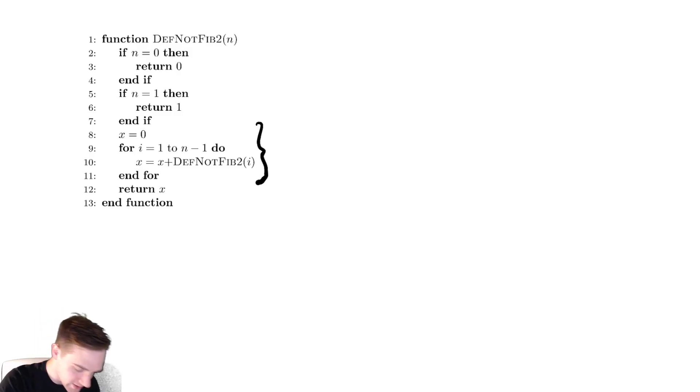We are looping and making recursive calls as we loop. So the cost of one run of this loop is t of i. So the total runtime for that entire for loop would be the sum from i equals one to n minus one of t of i.